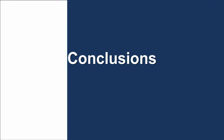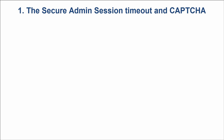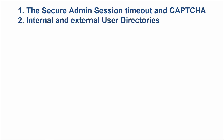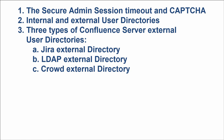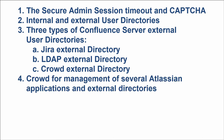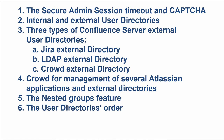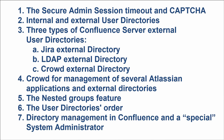Let's sum up. You need to define the timeout of the secure admin session and the number of failed login attempts before CAPTCHA is displayed, to find a balance between convenience and security. Confluence Server supports two types of user directories: internal and external. There are three types of external directories: Jira, LDAP, and Crowd. Crowd is strongly recommended when you have several Atlassian applications and external directories. The nested groups feature helps assign shared permissions automatically. The order of user directories is very important. The best option is to leave the internal directory enabled with only one user — a special system administrator.